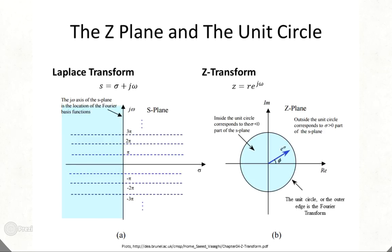The Z-plane is a complex 2D visualization of the Z-transform. If you took the Y-axis of the S-plane and formed a circle with it, you get the Z-plane, complete with the outer edge of the circle on the Z-plane being the Fourier transform.